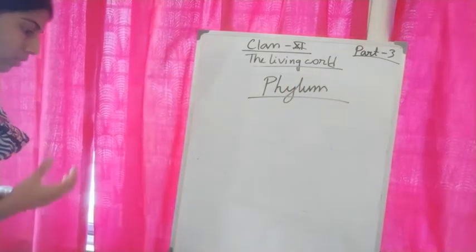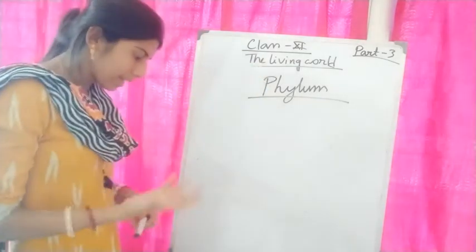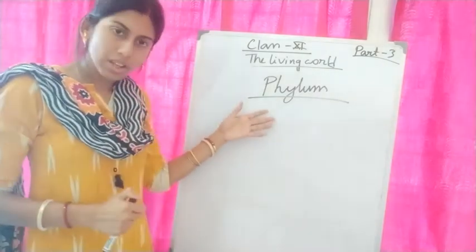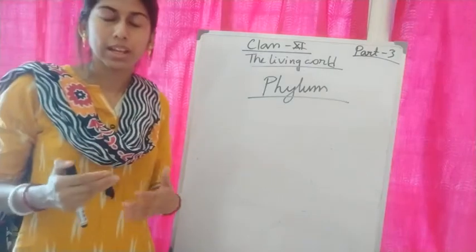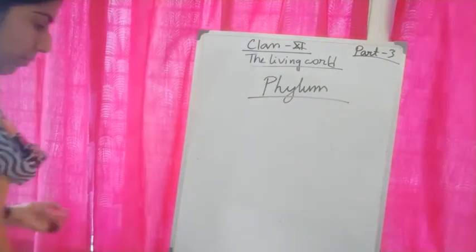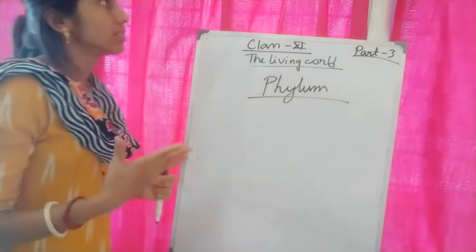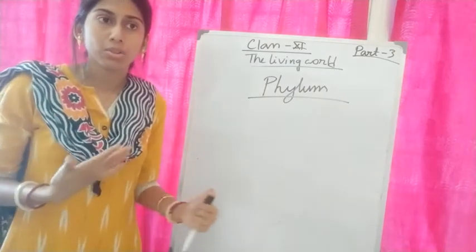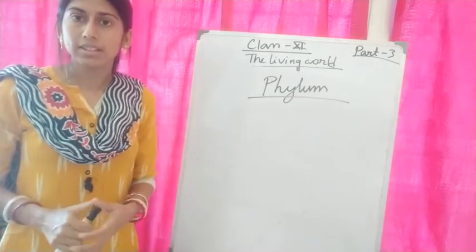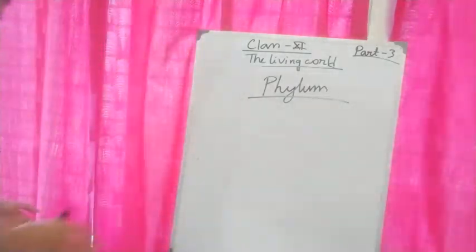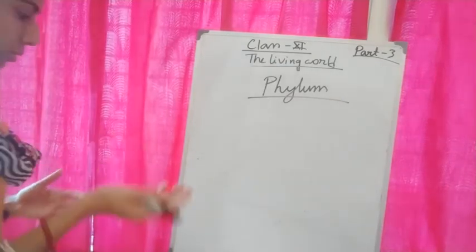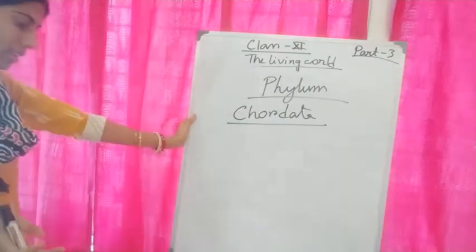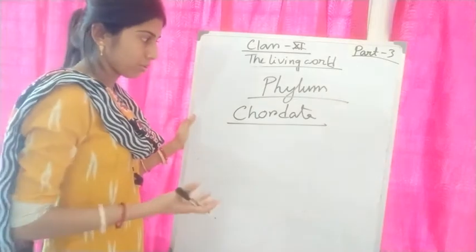The next category is phylum, which includes related classes. Classes having a few characteristics in common will be placed under the same phylum. For example, phylum Chordata includes organisms with some common characteristics such as presence of notochord, dorsal hollow neural system, and pharyngeal gill slits.